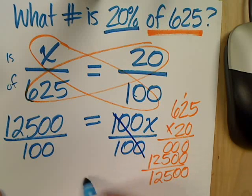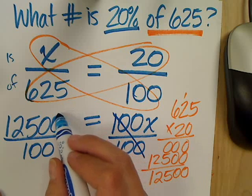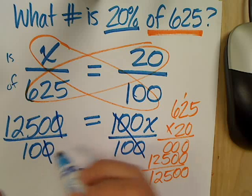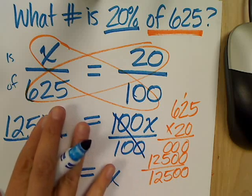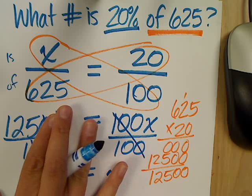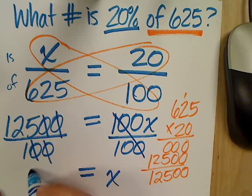My 100 over 100 becomes 1, so I'm left with X here. And then use that shortcut. Take a 0 from top and the bottom and do it again from the top and the bottom. So, what am I left with? 125 over 1, which is written as 125.